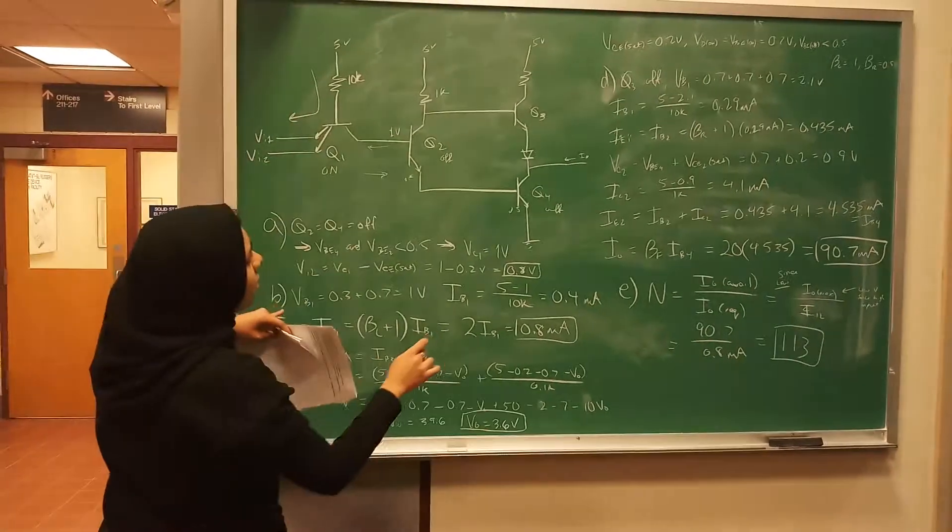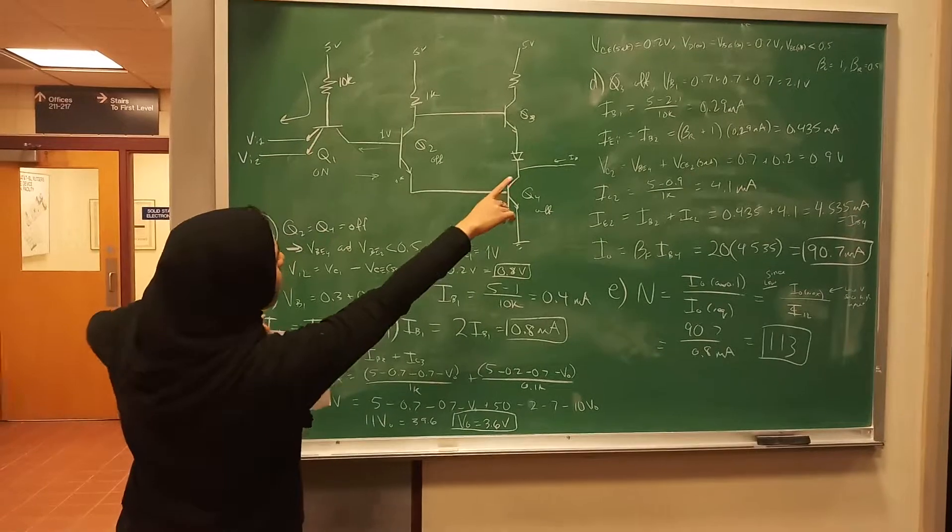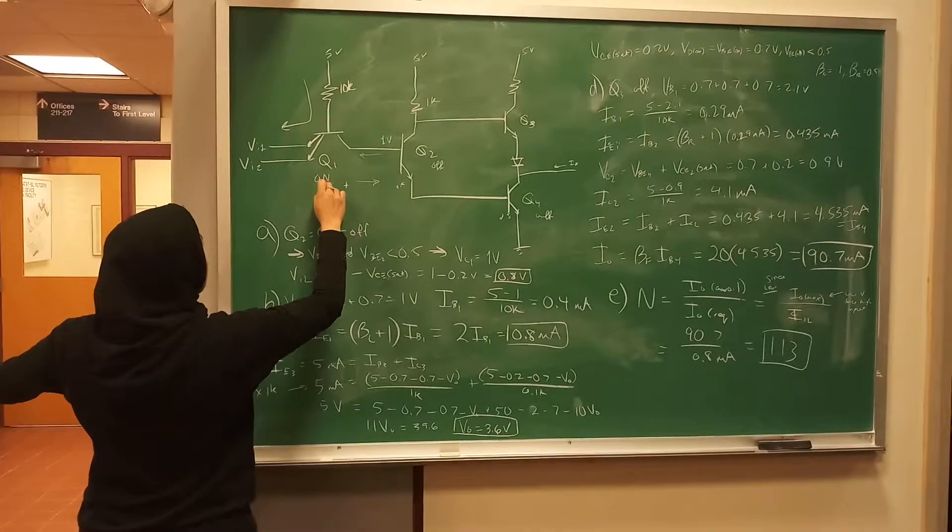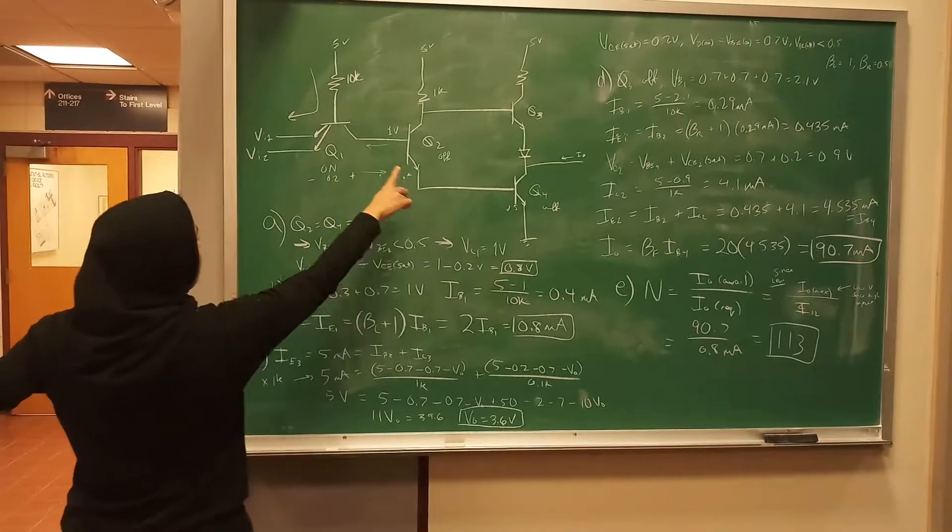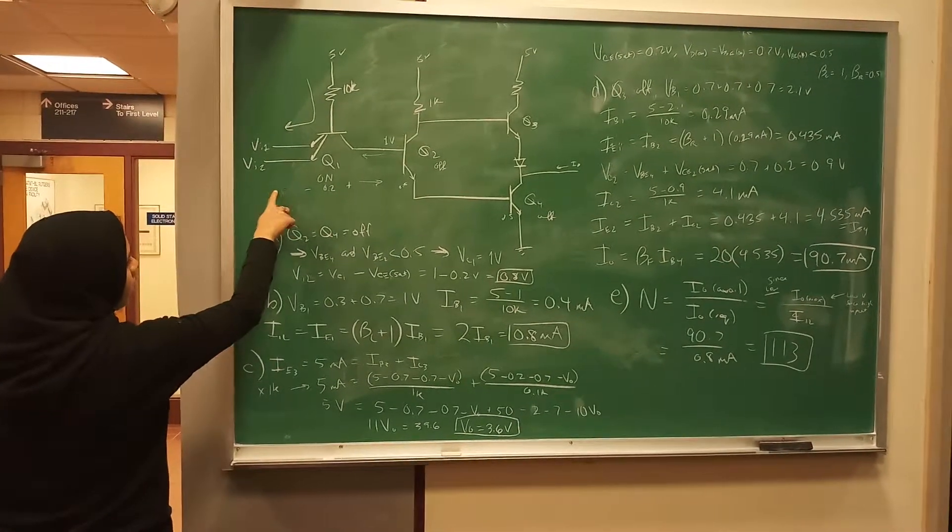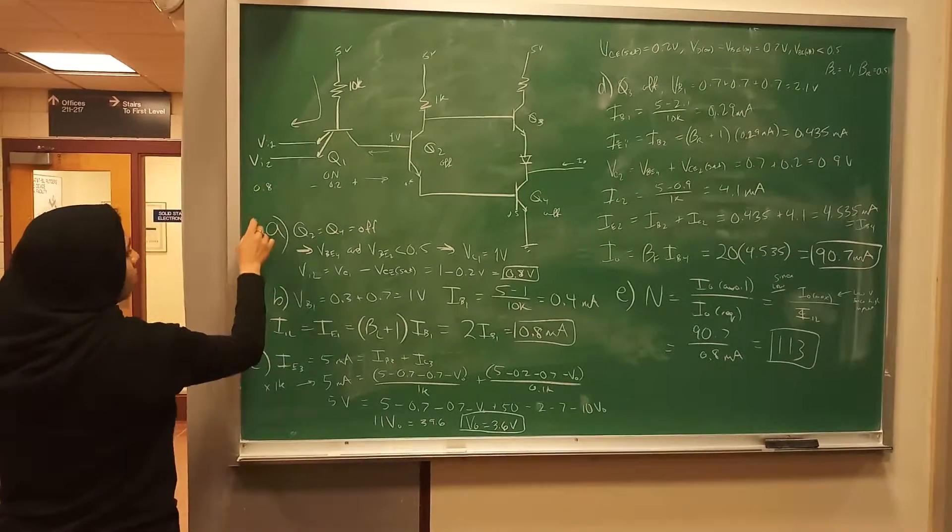Anytime you have TTL, it's saturated. So it's given as 0.2, so it's 0.2 here. So you take that 1 volt minus 0.2 to give you 0.8 here as V_input_low.